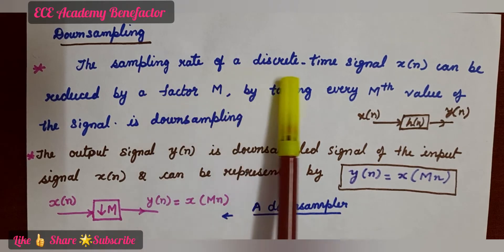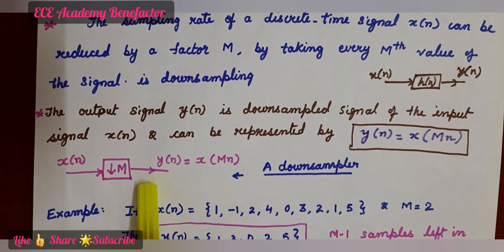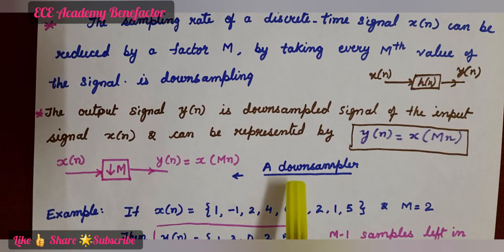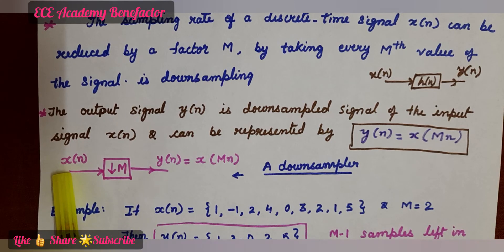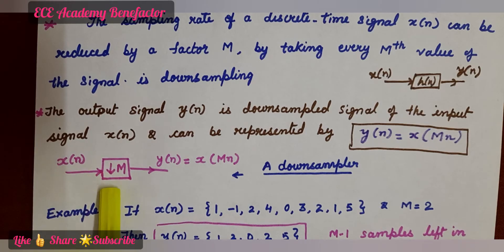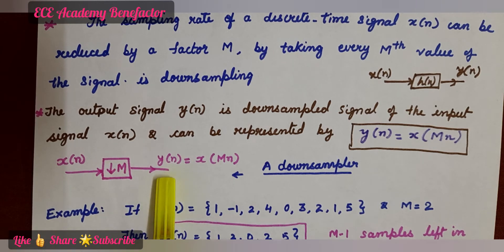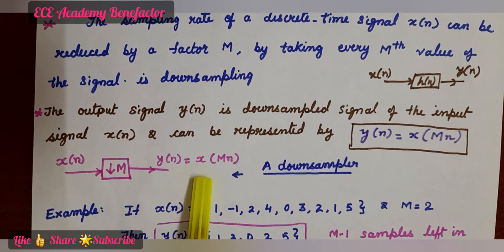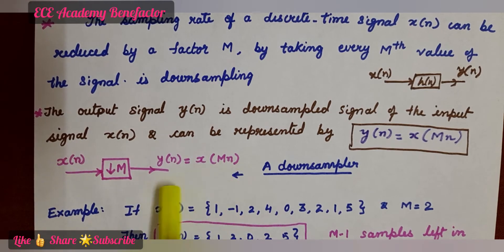What is downsampling? The sampling rate of a discrete time signal x of n is reduced — when this happens, we say it is downsampling. So let us see who does this downsampling: a downsampler. The downsampler is represented in this block diagram form. The input is x of n, which is downsampled by a factor capital M to give y of n as the output signal.